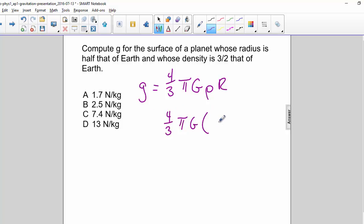We're going to replace the density with three halves rho of the Earth and the radius with one half the radius of Earth. We'll factor out three halves and the one half and we're left with four thirds pi G density of Earth, radius of Earth.